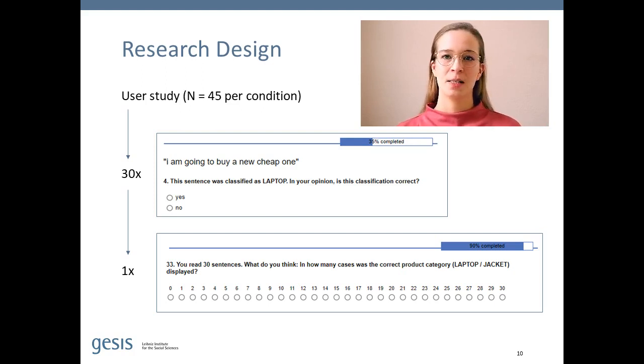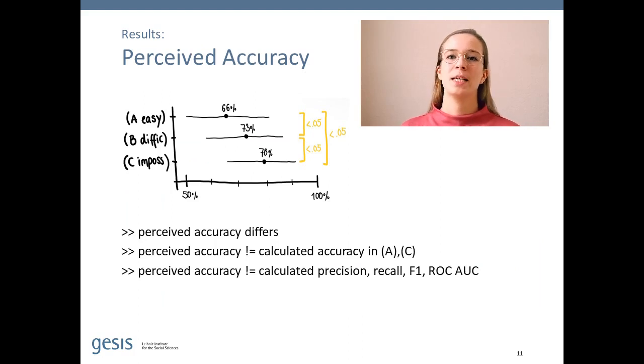So let's have a look at the results. As expected, we see a rather low perceived accuracy in condition A, slightly higher perceived accuracy for condition B, and the highest score in condition C.